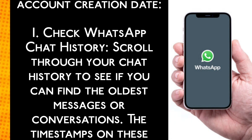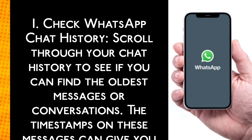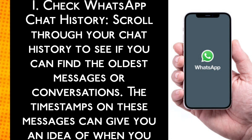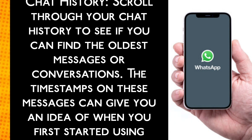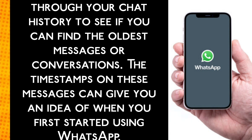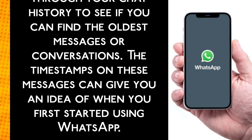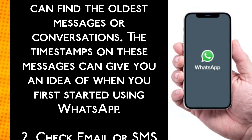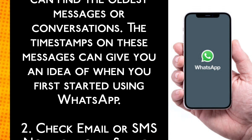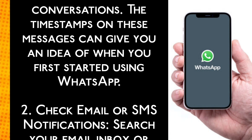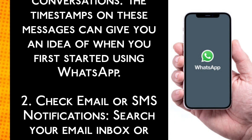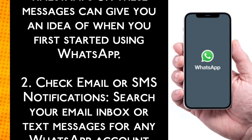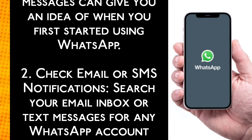Method 1: Check WhatsApp Chat History. Scroll through your chat history to see if you can find the oldest messages or conversations. The timestamps on these messages can give you an idea of when you first started using WhatsApp.